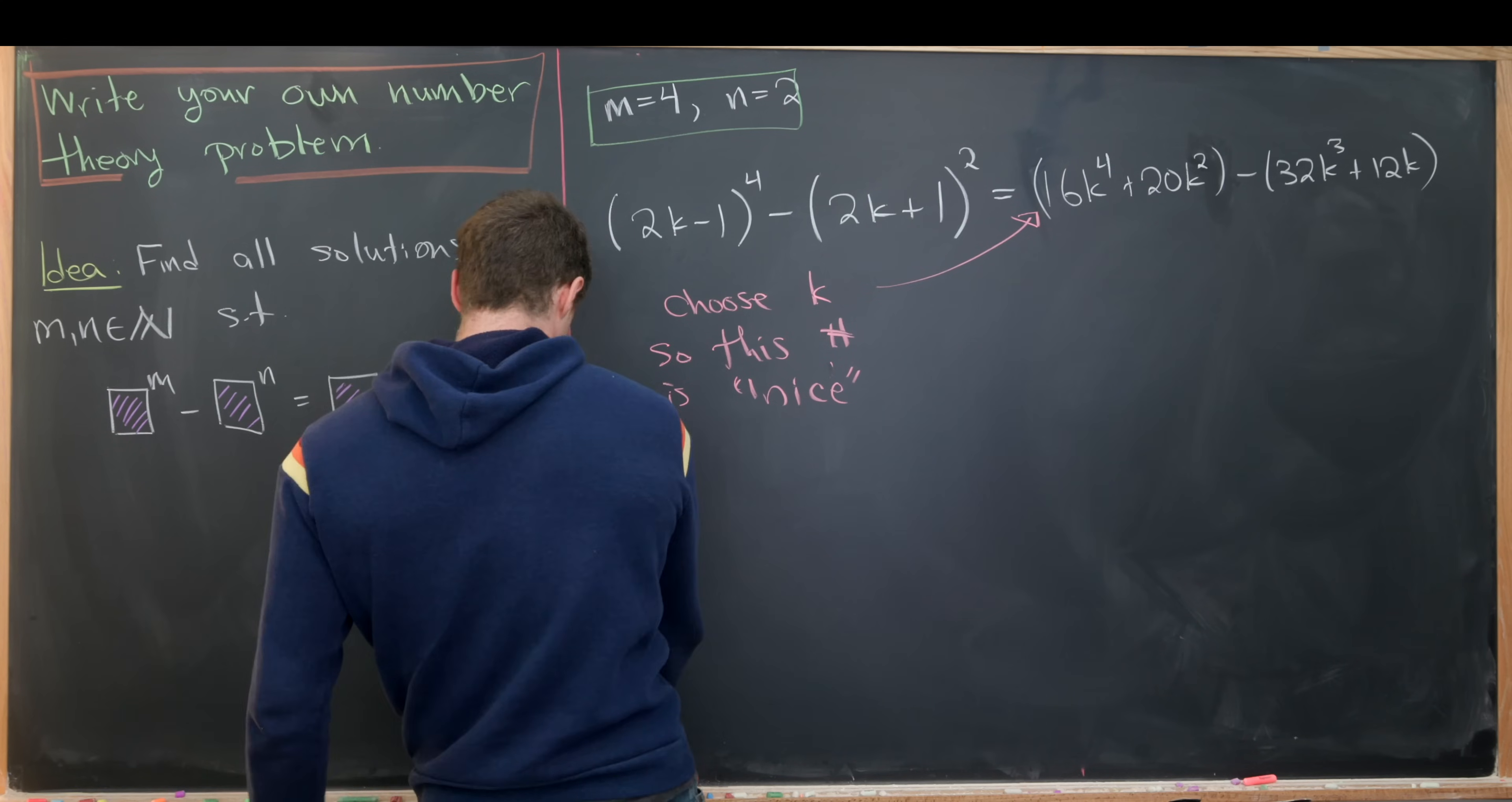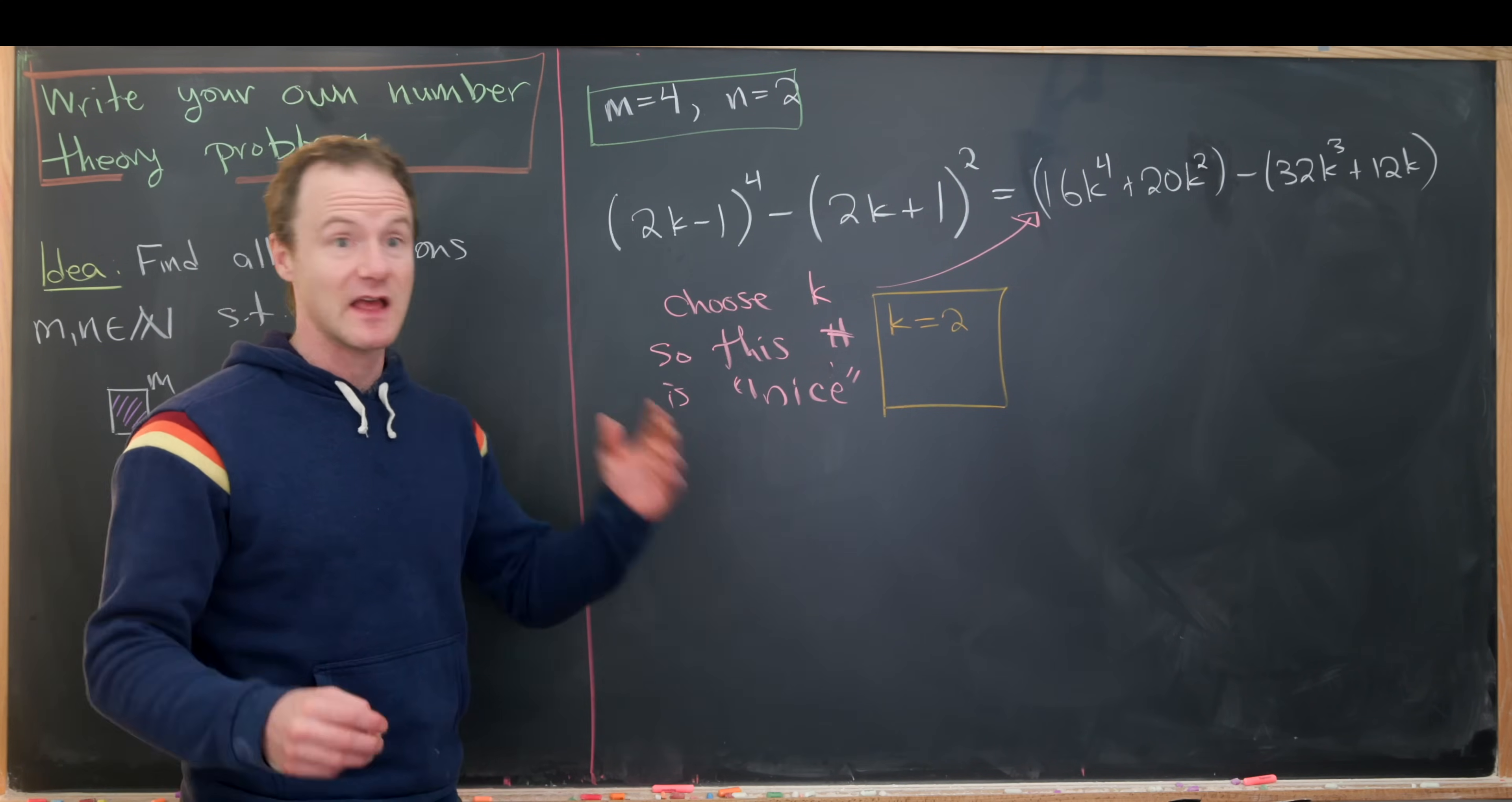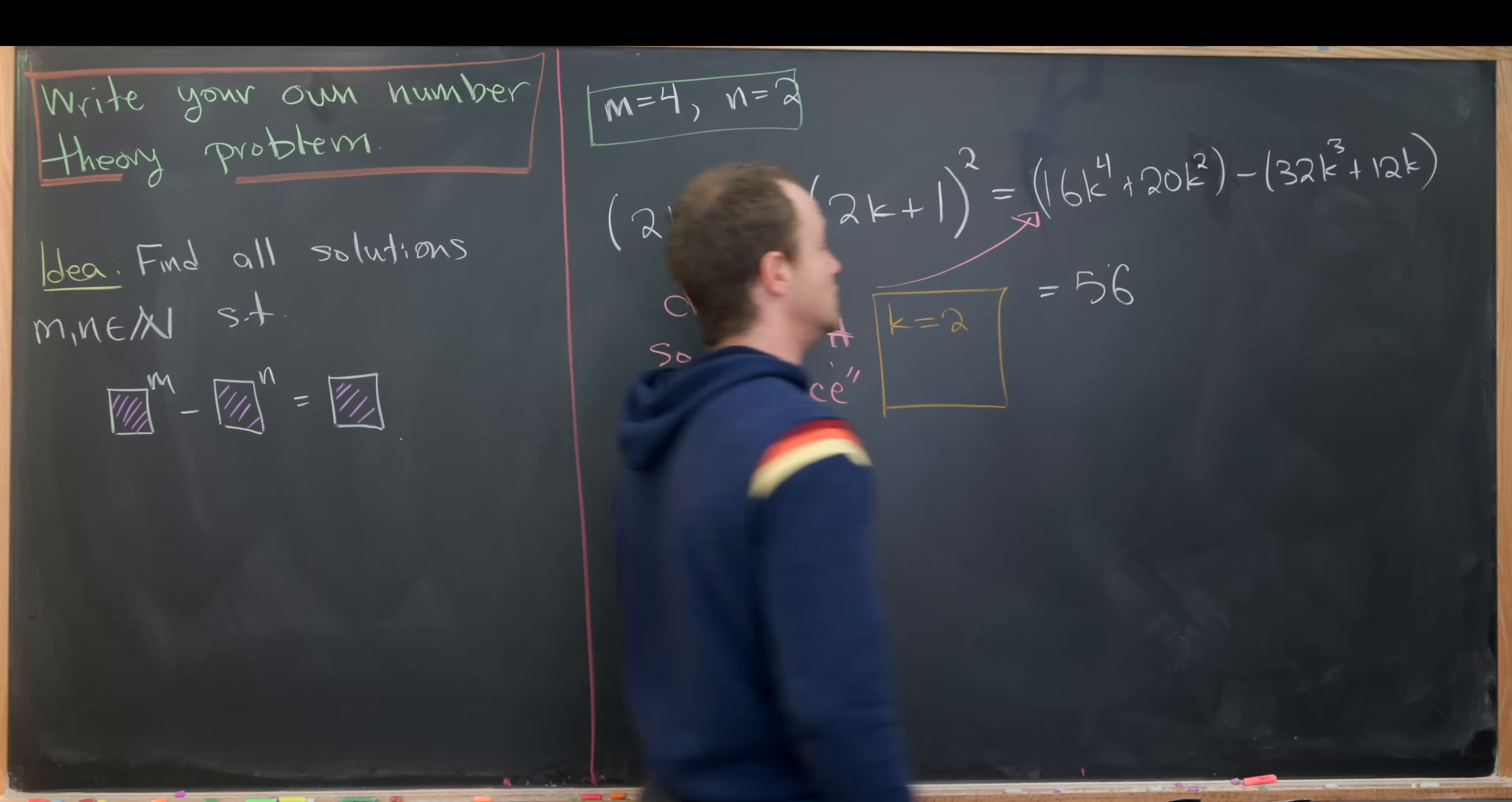You can play with this as much as you want, but what you'll see is if you take k equal to 2, you get something which is fairly small. That's really what I mean by nice—it's not that big of a number. Other values of k will give you astronomically huge numbers, but if you take k to be equal to 2, you'll see that this simplifies to 56.